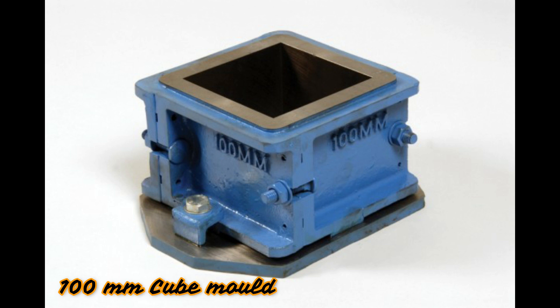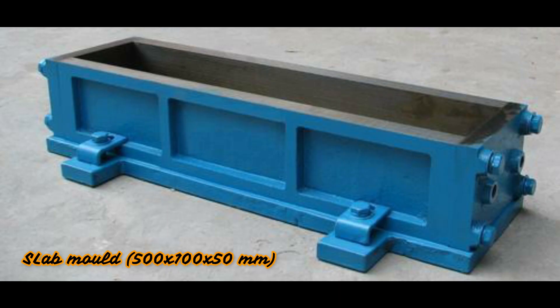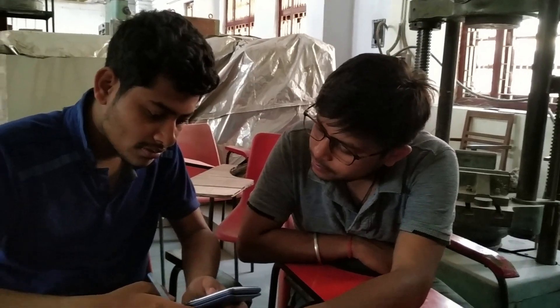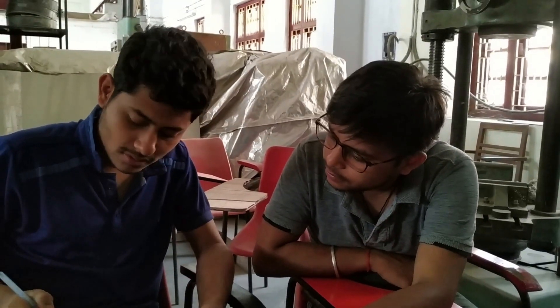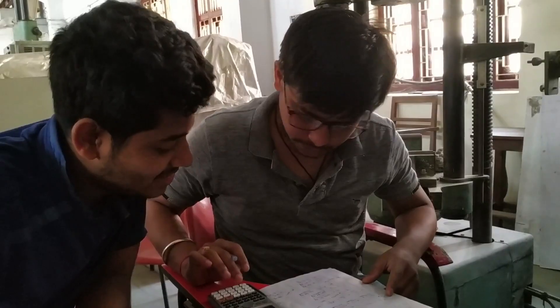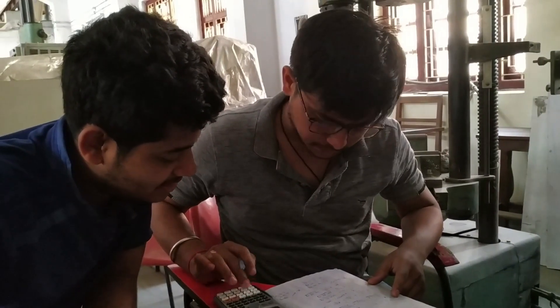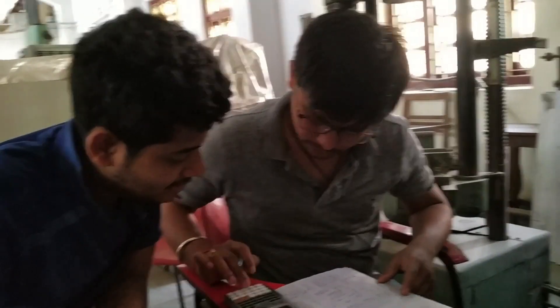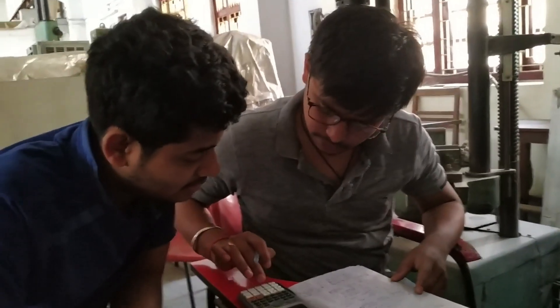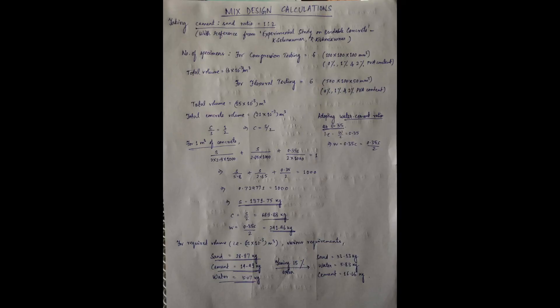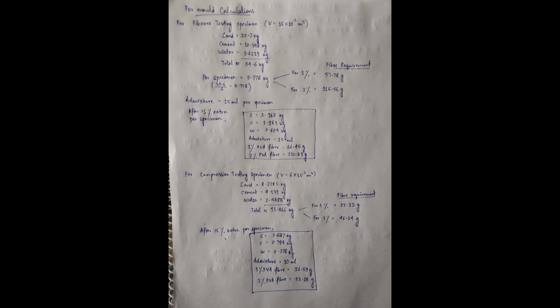Cube and slab specimens with appropriate dimensions were selected for testing. We then proceeded with mix design calculations as per IS 456-2000. The cement to sand ratio was taken as 1:2 initially, and the water to cement ratio was taken as 0.35.